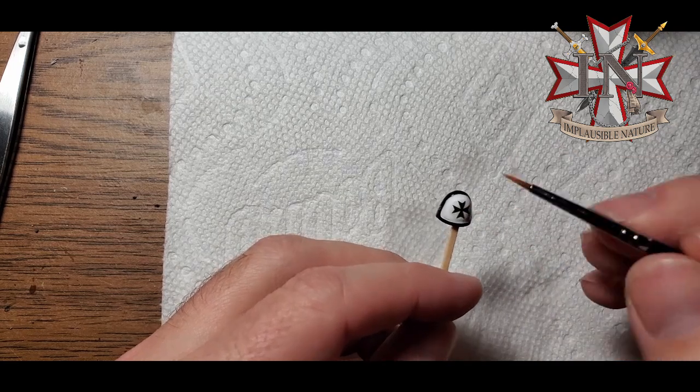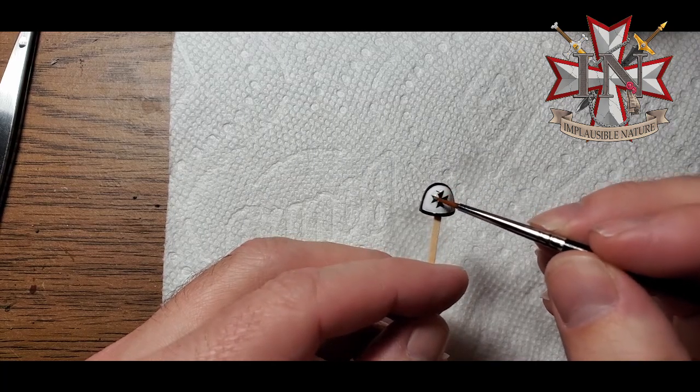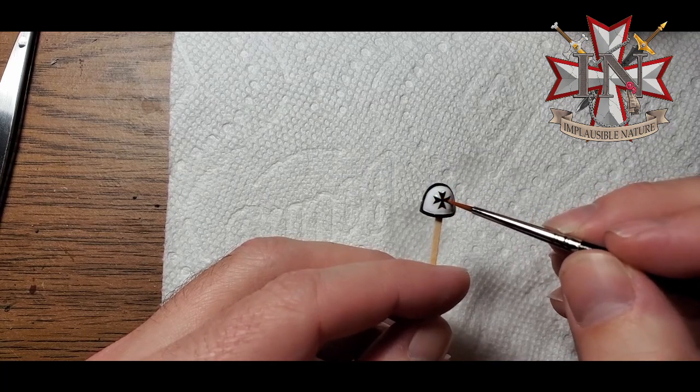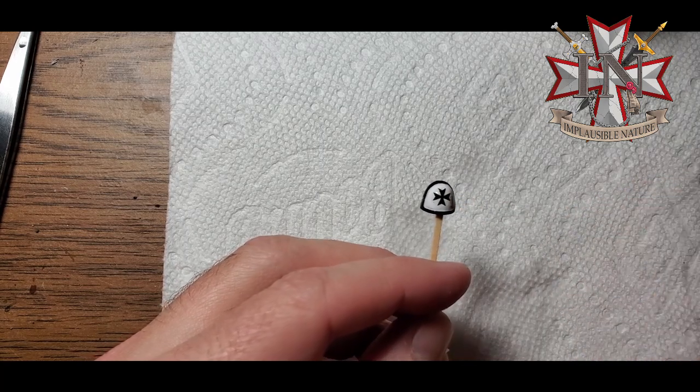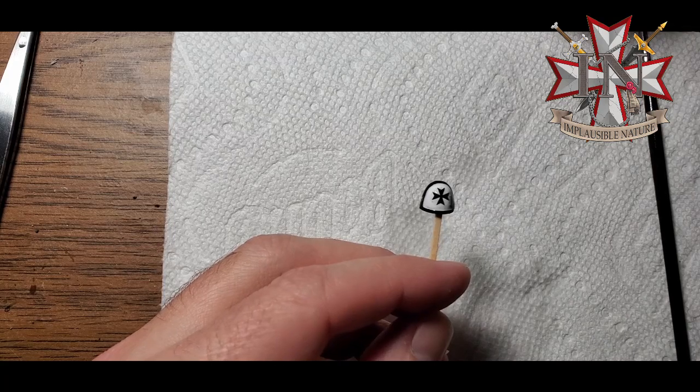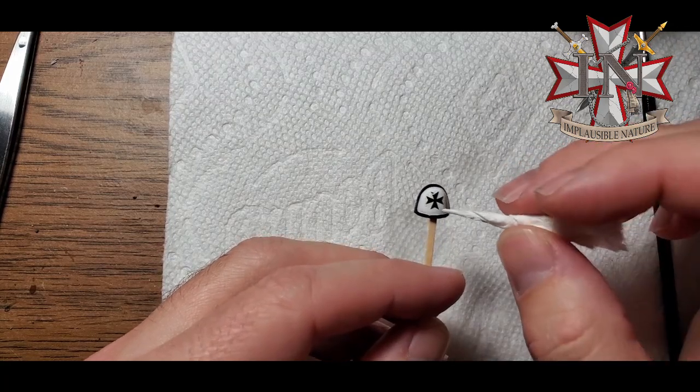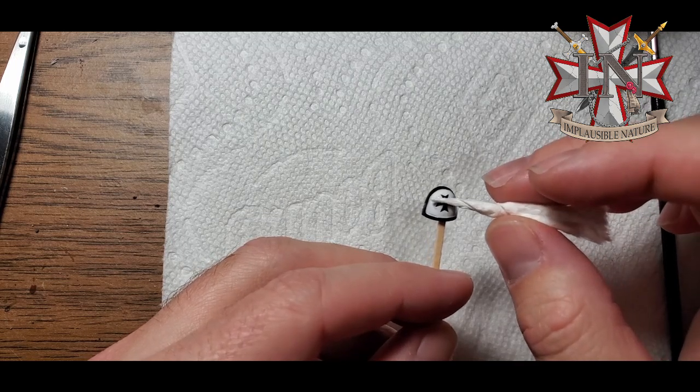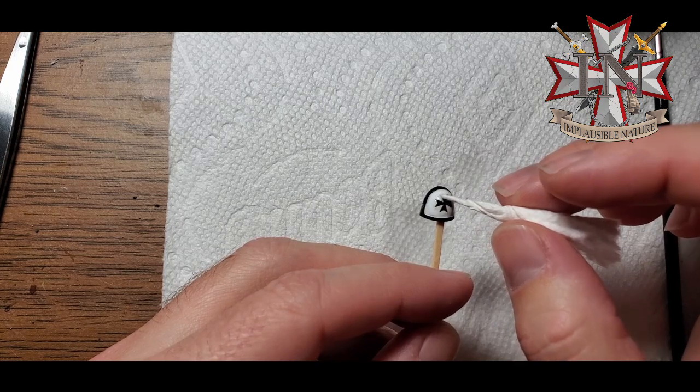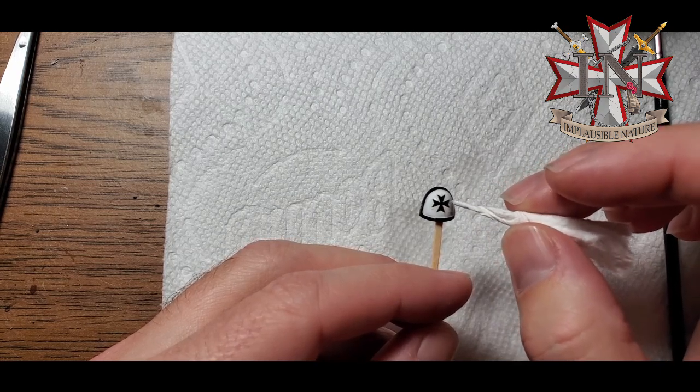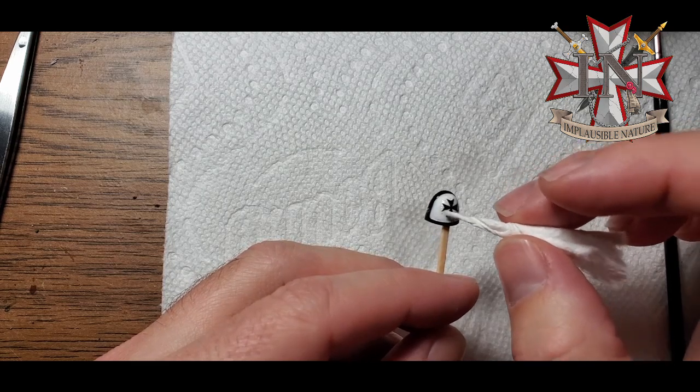If you get too much, it'll slide around very easily. So that's pretty good right about there. So now we're going to take a little bit of rolled up tissue paper or a paper towel and we're just going to kind of dab it just a little bit here to soak up some of that excess moisture from the Microsol and the water from the decal.